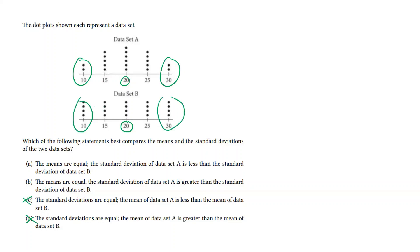This means there is more variance in dataset B. So the standard deviation of dataset A is less than the standard deviation of dataset B.